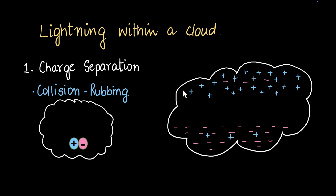You might wonder why one turns positive when they collide. Remember when you rubbed a comb against your hair — one of them turned positive and one turned negative? Something similar is happening here. So the positively charged particle is now going to move upward, continue on its way, and get settled on the top of the cloud.